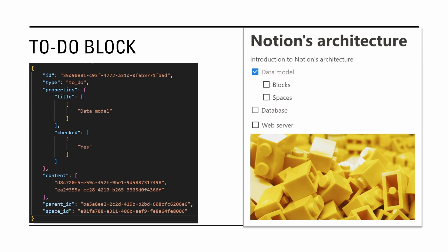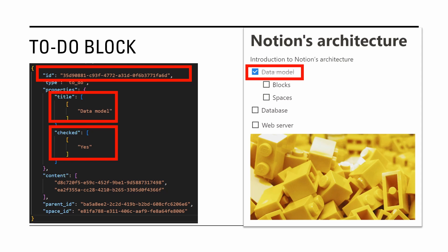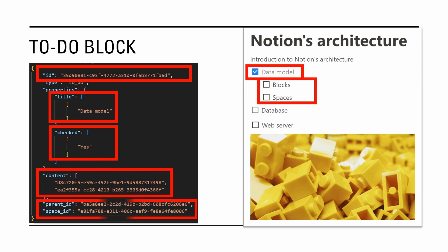Here is an example of a to-do block that stores a completed to-do item. This block type looks very similar to the page block. It stores a unique identifier of a page, text and status of the to-do item, references to child blocks, a parent, and a workspace.